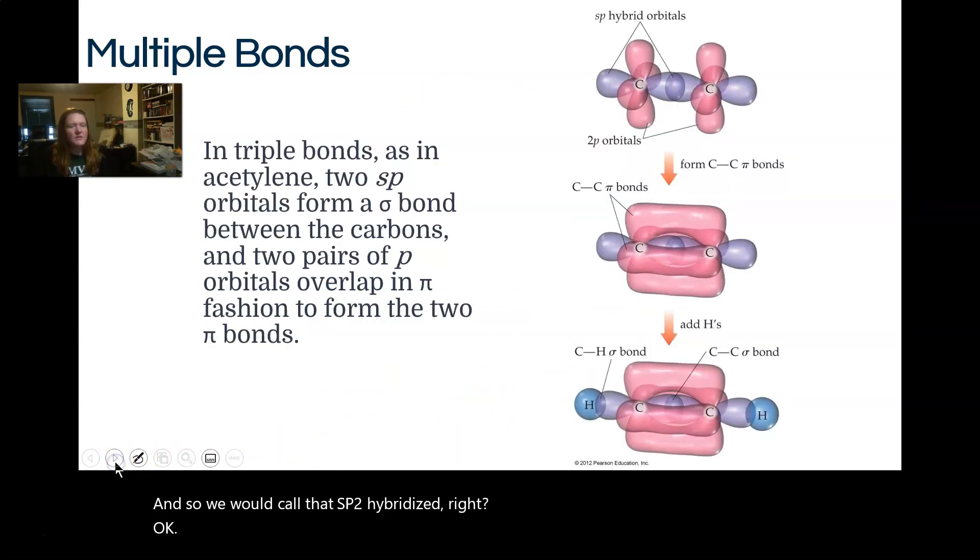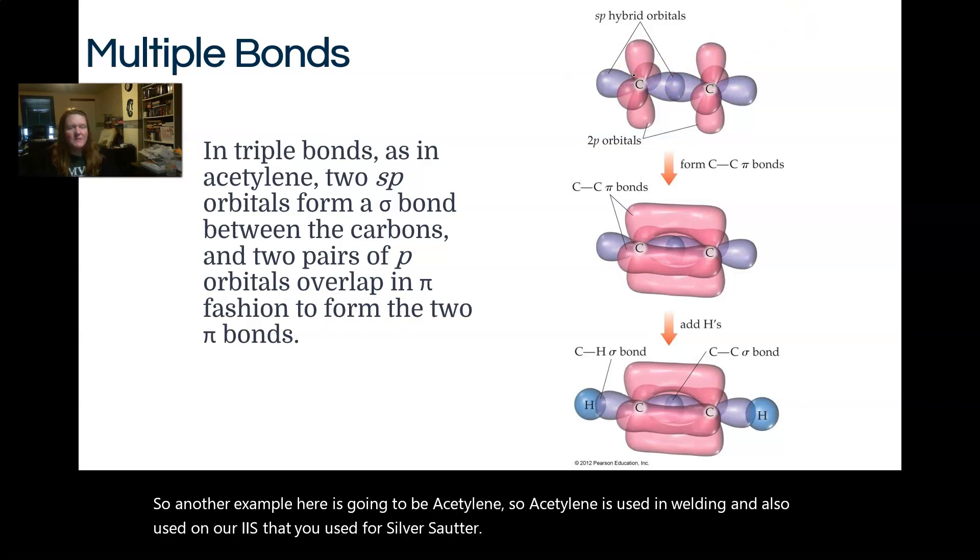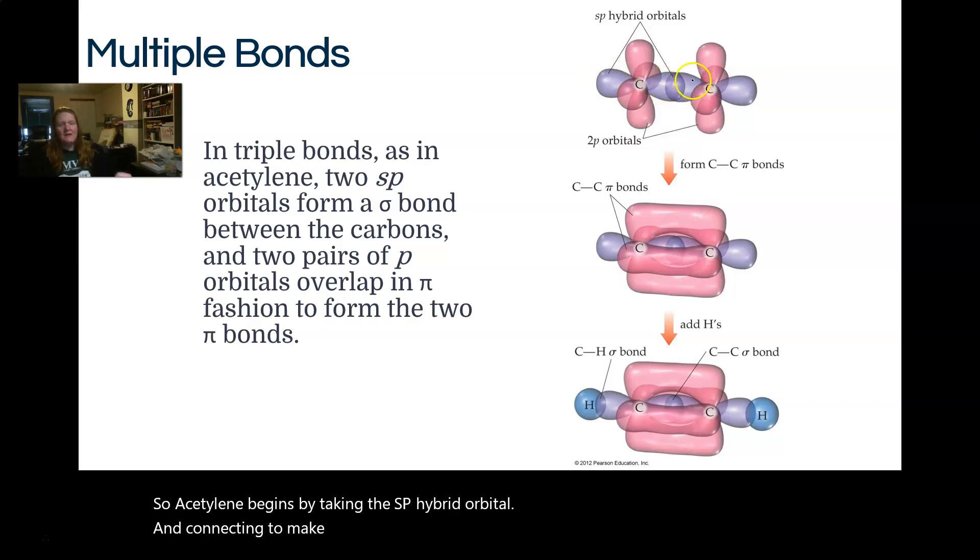So another example here is going to be acetylene. Acetylene is used in welding and also used on our AAS that you used for silver solder. Acetylene begins by taking the sp hybrid orbital and connecting to make a sigma bond between the two carbons.